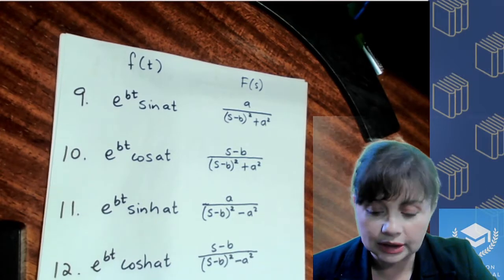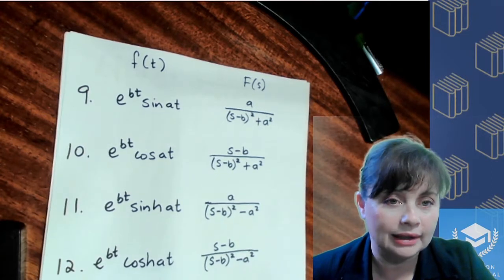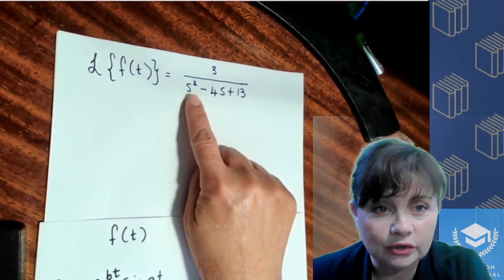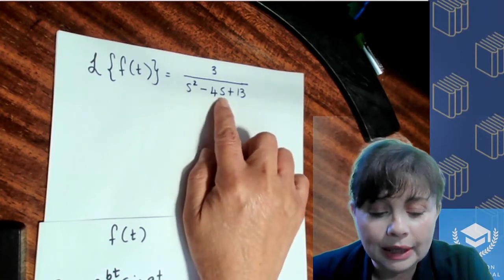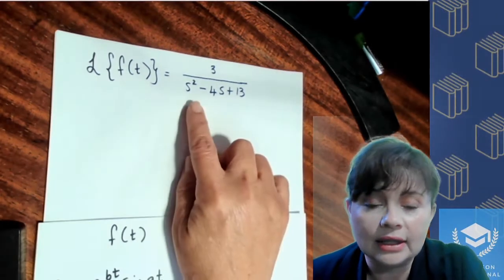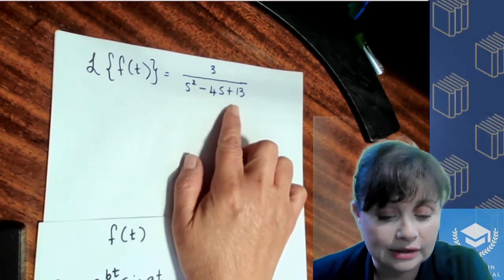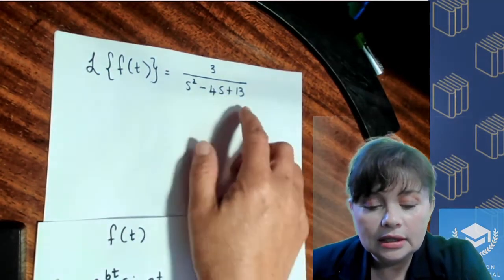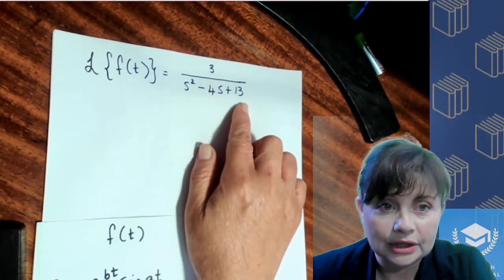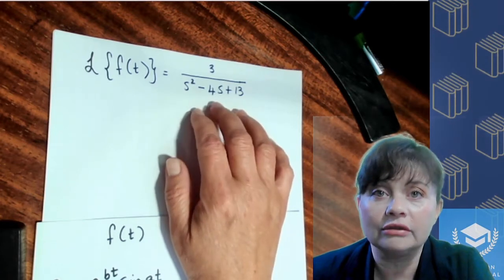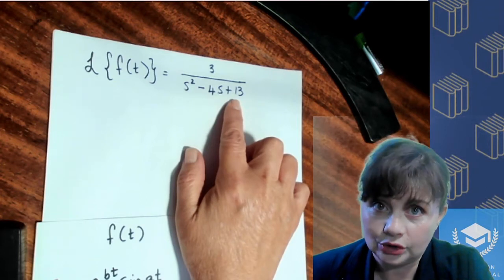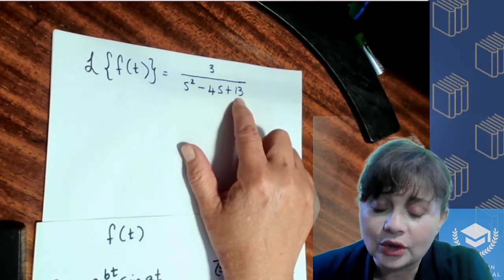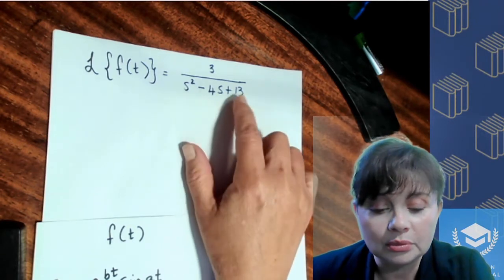I only wrote down from number 9 to number 12, which is what's on my table — your table might look a little different. If we look at the denominator, you see what you've got is a trinomial. Comparing this form to what is on your table, nowhere do you have a trinomial in a denominator of F(s). So if you have the trinomial and it's not the same as the form on the table, you want to see if you can factorize. This you cannot factorize because of the 13 in the third term — that's a prime number, so its only factors are 1 and itself.